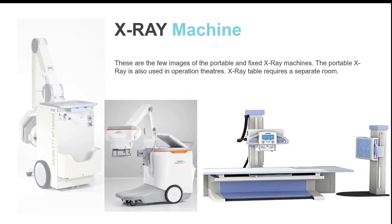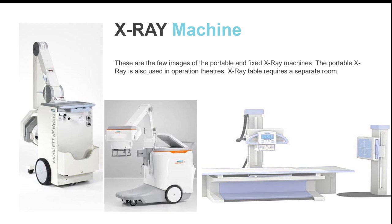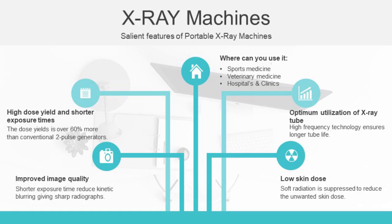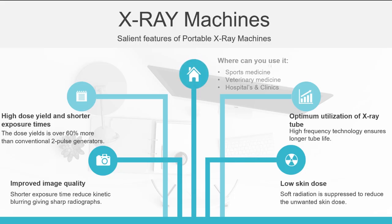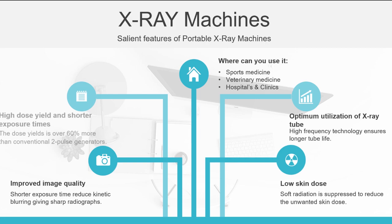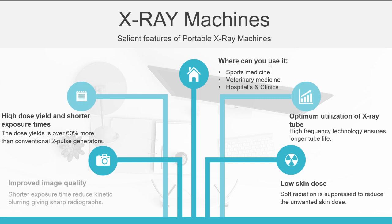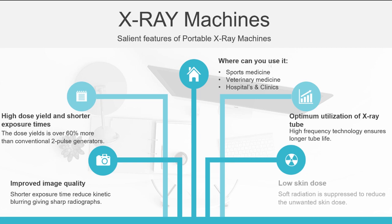These are a few images of portable and fixed X-ray machines. The portable X-ray is also used in operation theatres. It should be noted that an X-ray table always requires a separate room. Salient features of portable X-ray machines: they can be used in sports medicine, veterinary medicine, hospitals and clinics. They have a high dose yield and shorter exposure time — the dose yield is over 60% more than conventional two-pulse generators. High frequency technology ensures longer tube life. Shorter exposure time also reduces kinetic blurring, giving sharper radiographs, and soft radiation is suppressed to reduce the unwanted skin dose.